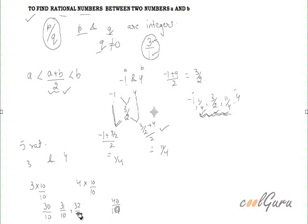So I know that 31 by 10 is greater than 30 by 10. Similarly, 32 by 10, 33 by 10 and so on. These all numbers are between 30 by 10 and 40 by 10, or I can say these all numbers are between 3 and 4. So this method we can also use for finding rational numbers between A and B or between any two rational numbers A and B.